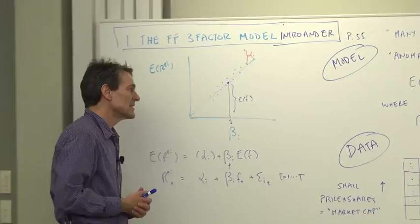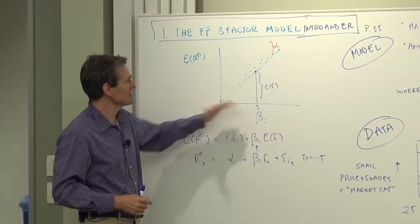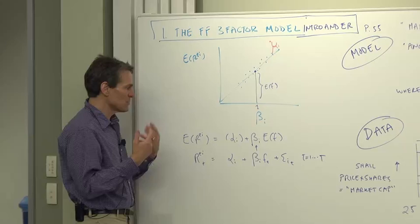Background, what are we doing? It's a standard expected return beta model. If you recall, the whole idea was expected returns, we explained them by betas. Higher expected returns go with higher betas. So the model in equations is expected return should be proportional to beta. Alpha is the residual, it's the part of expected return not explained by betas.